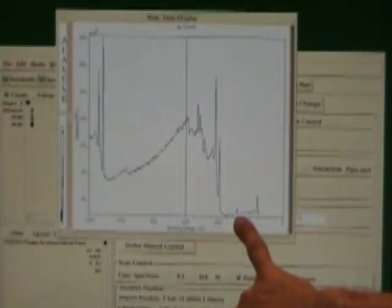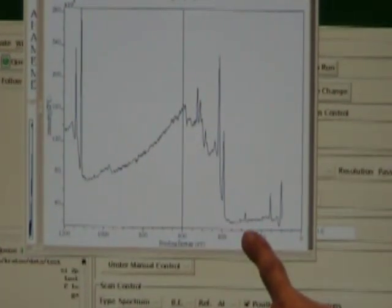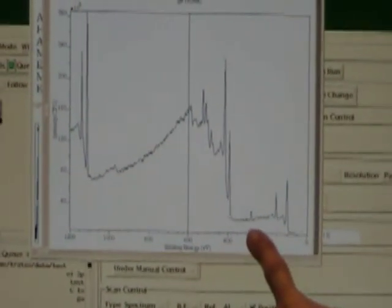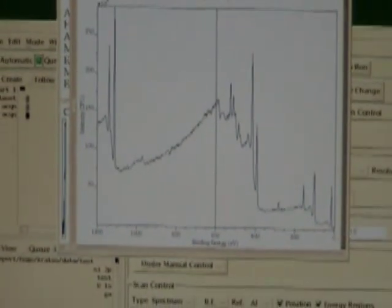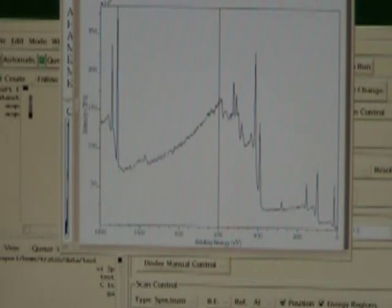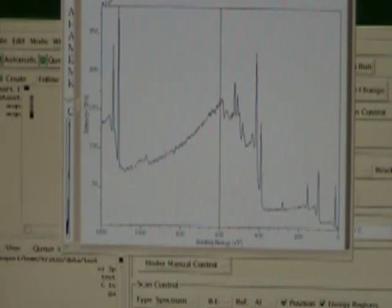There's an oxygen peak here. We'll be zooming in on these later and identifying them. A little bit of carbon on the top, the very topmost surface of the sample, which is typical for something that has been out of the vacuum chamber. And a few more gallium peaks.